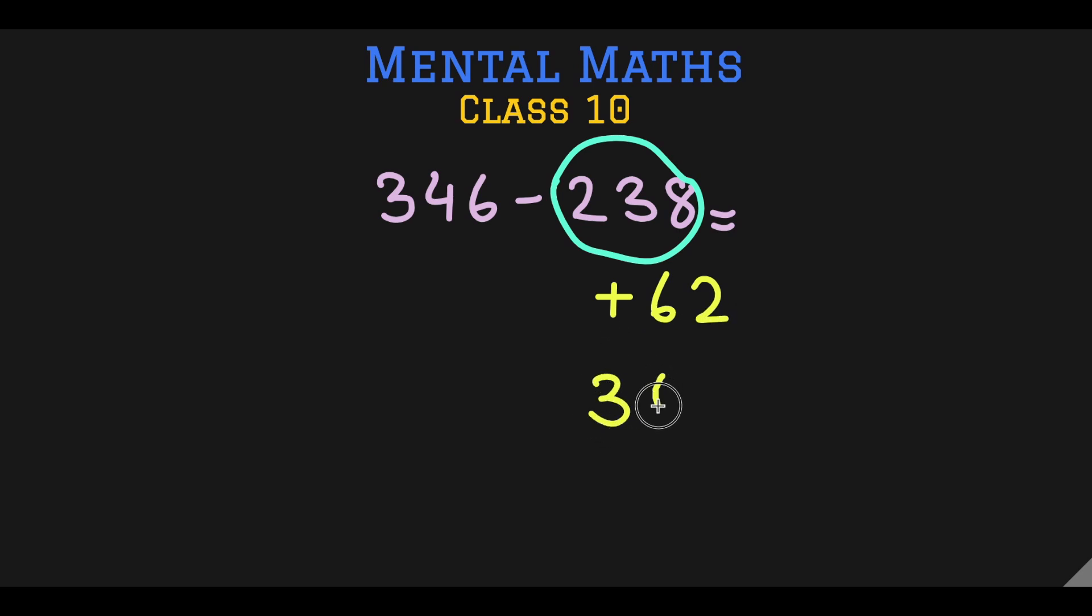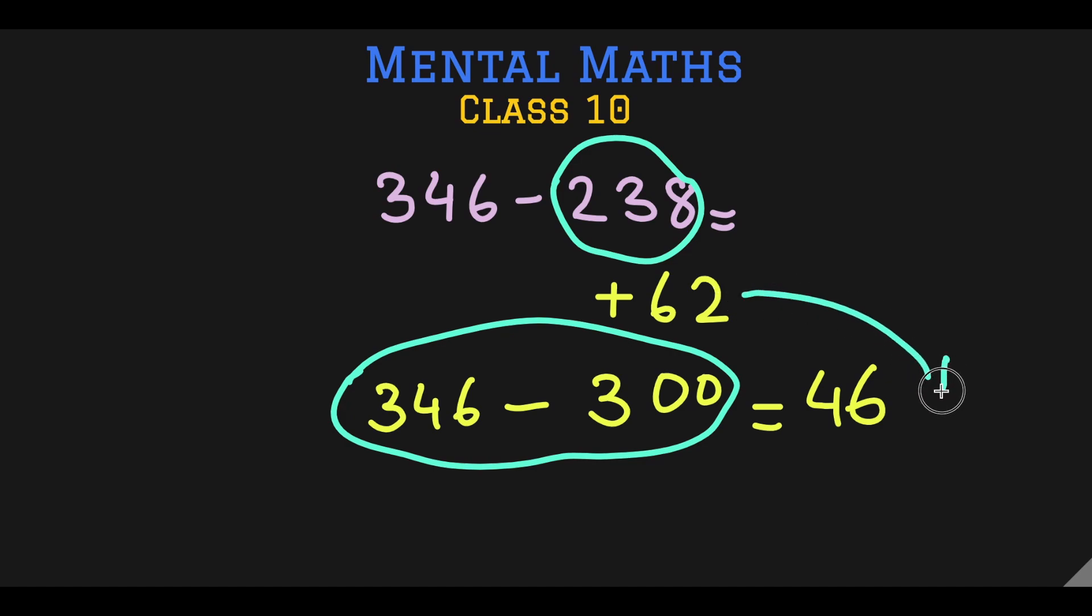And this stays the same. So 346 minus 300 is 46. This is easier subtraction. Now this is not our final answer because we have to add this 62 to 46 to get our final answer. And that is 108. This is our answer that we got using the second method.